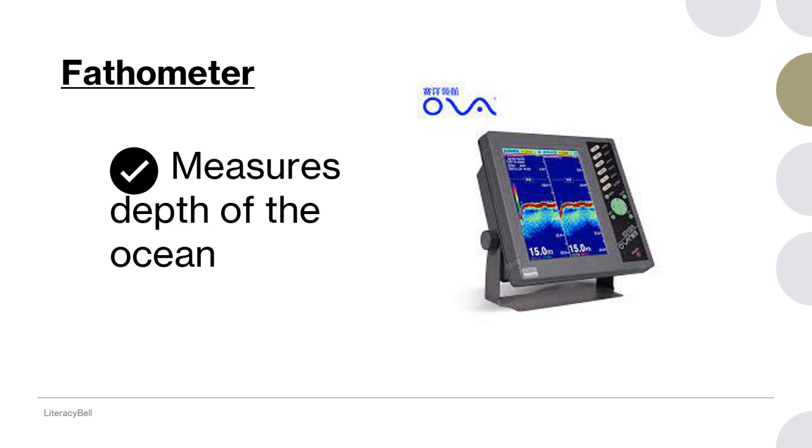The next device is fatometer. What is the use of fatometer? It is used to measure the depth of the ocean. We can observe at some places of the ocean the part is shallow and some part it is very deep. How is it measured? It is measured with the use of fatometer.